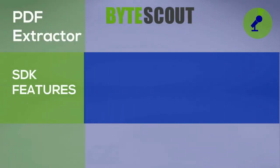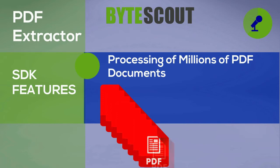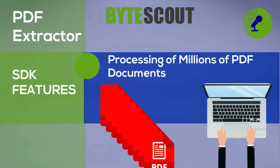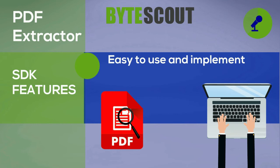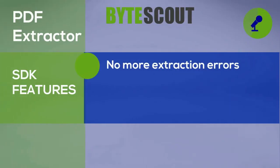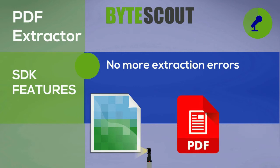PDF Extractor SDK features. Processing of millions of PDF documents — PDF Extractor's high performance engine works flawlessly under pressure, making it an ideal solution for processing large quantities of PDF reports, indexing large PDF libraries, and more. Easy to use and implement: no matter how complex your PDF document structure is, you'll find that PDF Extractor is easy to use and integrate into your existing systems seamlessly. No more extraction errors — PDF Extractor can even process damaged files that have a complex structure and would otherwise need to be processed manually.